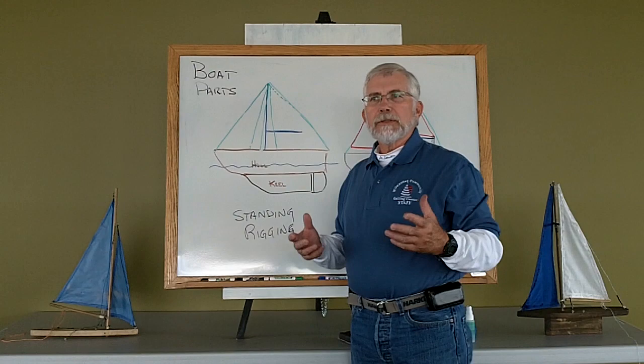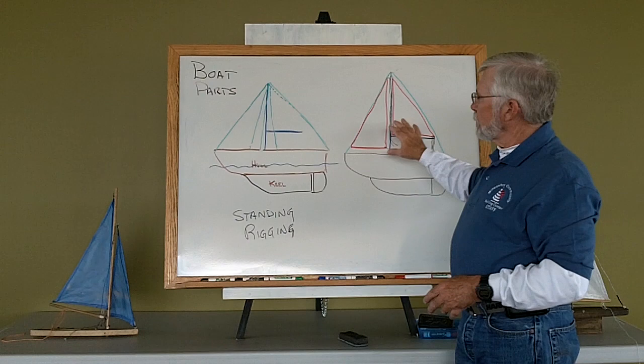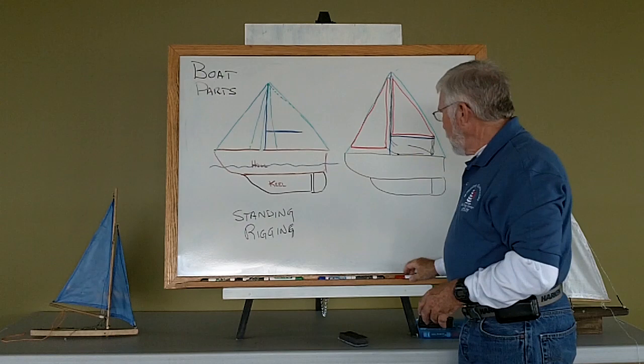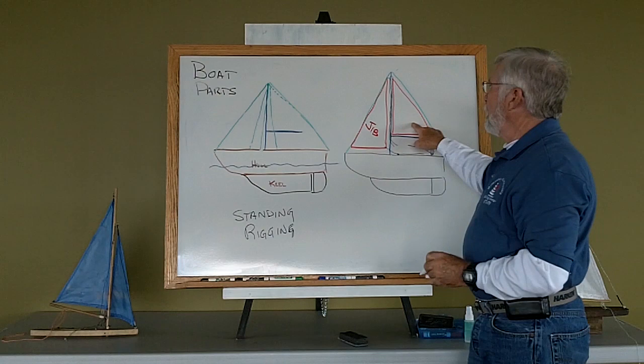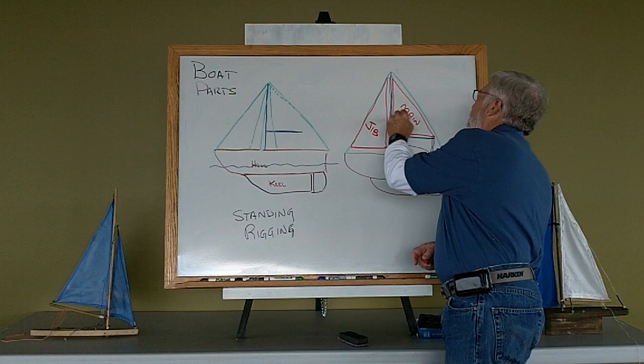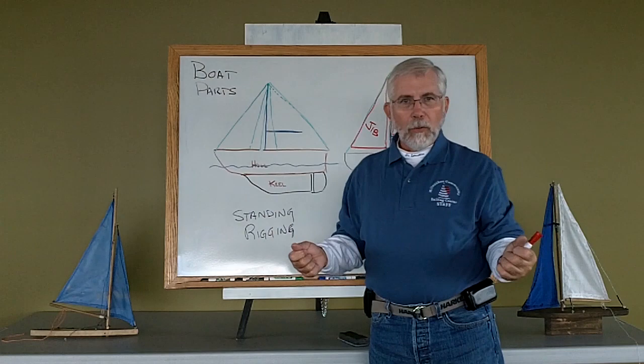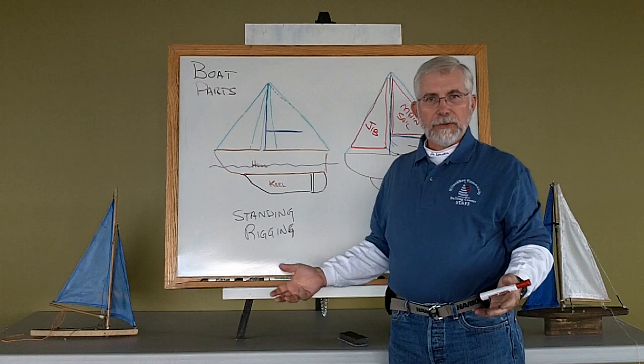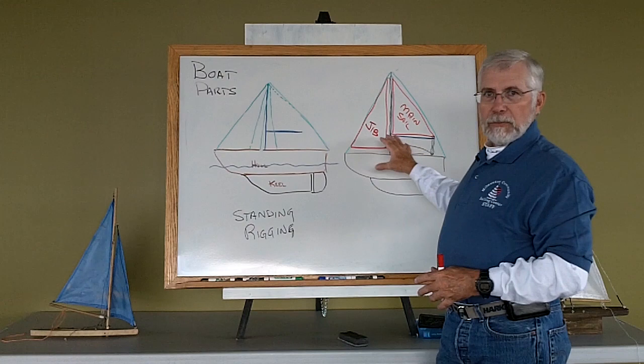So continuing the discussion on our boat parts, now let's add the sails to the boat. Same basic boat, but now we have a foresail that, in our case, we're going to call a jib and a mainsail. Now once I take a string or a rope from land and take it to a boat and put it on a boat, we no longer refer to it as a rope. We refer to them as lines. So I have a lot of lines on the boat to help me control the sails.